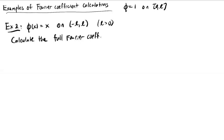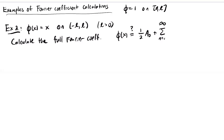We're going to look at the case where we're given the function phi of x equals x — sometimes called the identity function — on the domain between minus L and L. What we want to do is calculate the full Fourier coefficients. Remember, we expect that phi of x can be written as one half a_0 plus a sum of a_n cosine(nπ/L · x) plus b_n sine(nπ/L · x).